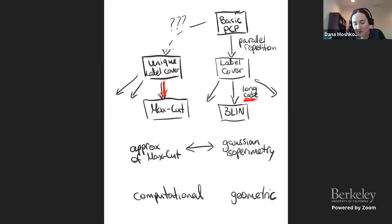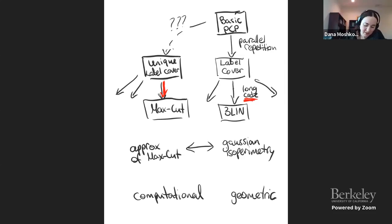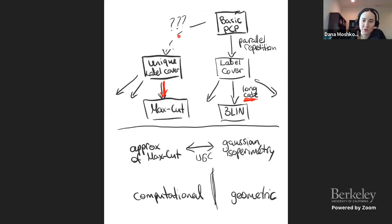So approximation for MaxCut is completely given by Gaussian isoperimetry — both the algorithm and the hardness — which is remarkable because one lives in computational world and the other in geometric world. This is true only assuming the UGC for now, which is a conjecture — that's the part we don't know how to prove.